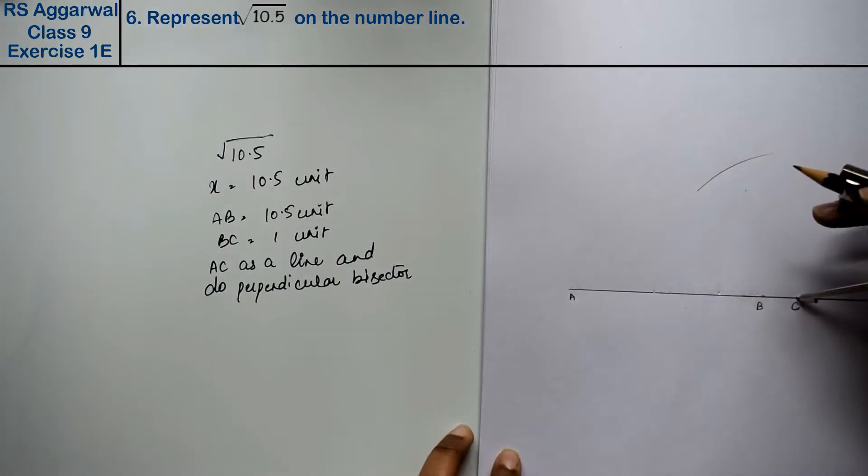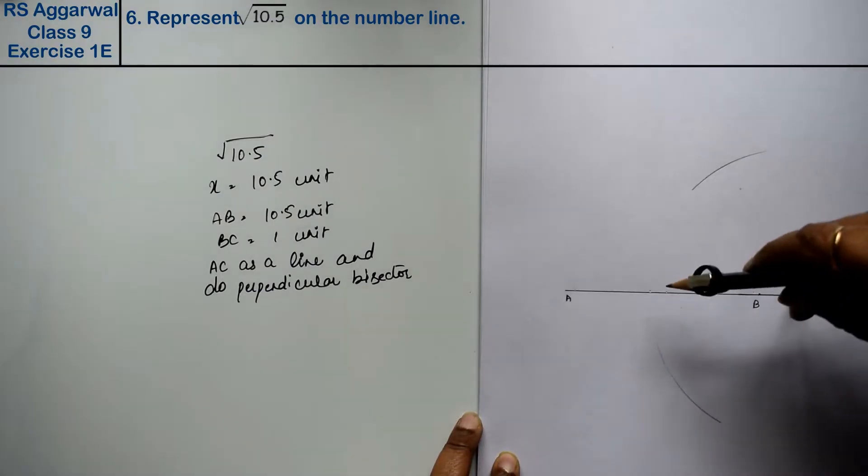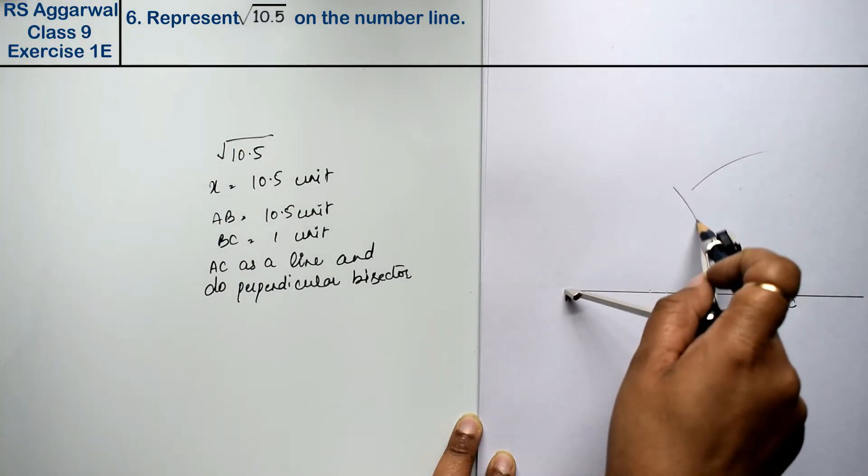From here, an arc is drawn, from here it's applied. Similarly, an arc from point A is applied.